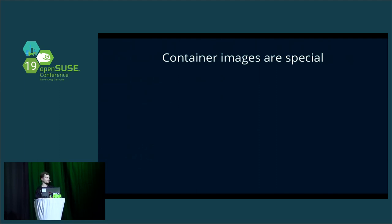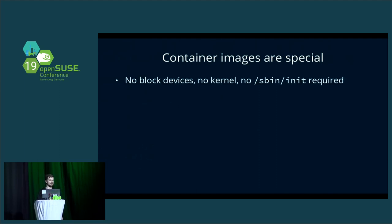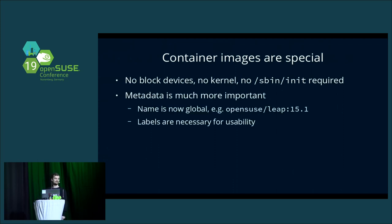Container images are special in that they don't normally deal with block devices. Containers don't have a file system and kernel to worry about, and you don't have to care about booting, which also means you don't need to add an init system like systemd. Metadata is much more important for containers because containers are just global. If you say I want to pull and use Leap, you get Leap — but you don't actually know which Leap. So we need labels to tag images with, yes, this contains Leap 15.1, yes this was built in 2019, this contains this version of the package, and other useful labels.